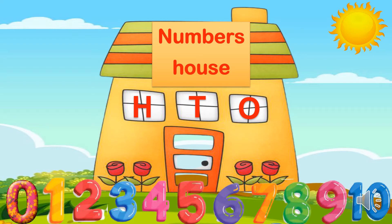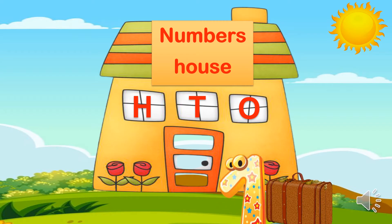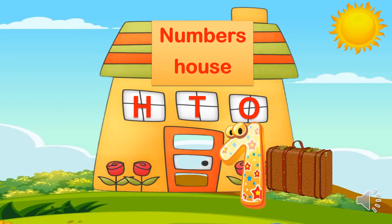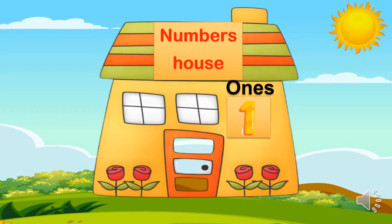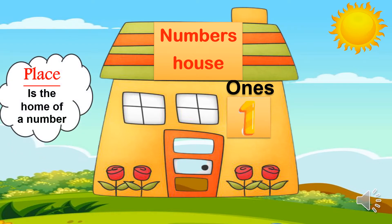Let's see. This is Mr. One. Hello, Mr. One. Do you want to enter the house? Yes, I want. In which room will you sit? I will take the ones room because I am only one digit. So, number one will live in the ones room because number one has only one digit. So, the place of number one means the room of the number which it entered.